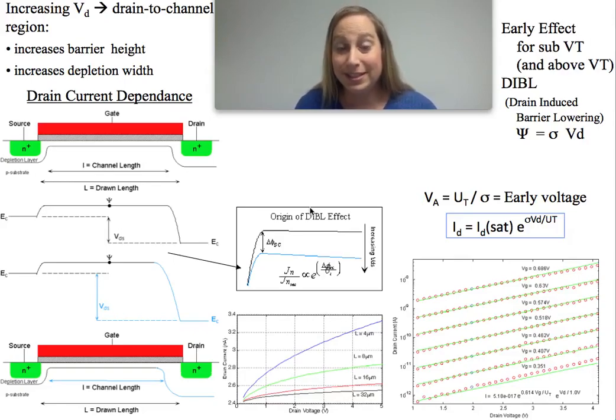At this point, we've assumed that you've seen something about the early effect and the initial discussion of what drain-induced barrier lowering might be. Now you're curious: what's really going on? What are the details? I want to get a little further into the conversation here.